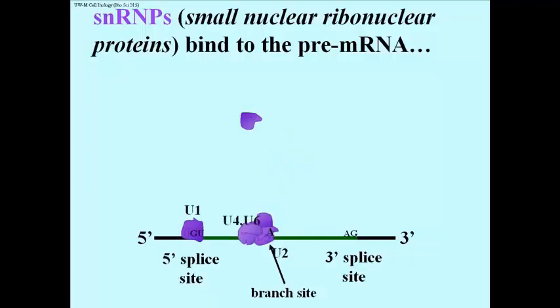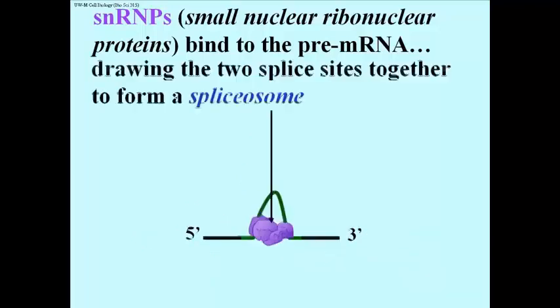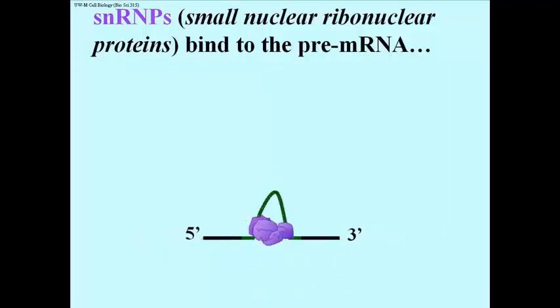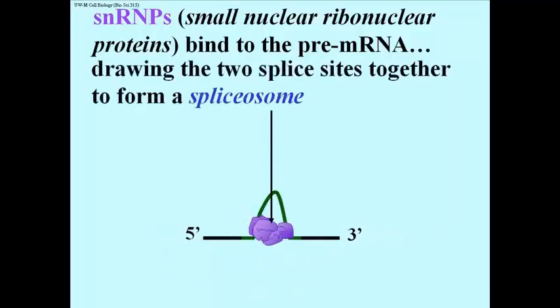Then, U4 and U6 associate with U2 at the branch site. After U5 SNRNP binds at the branch, the 5' and 3' splice sites are brought close together in a structure called the spliceosome.